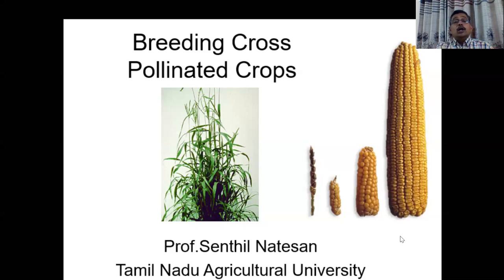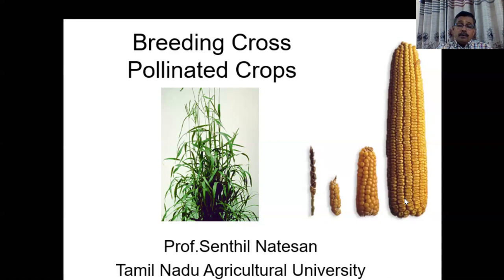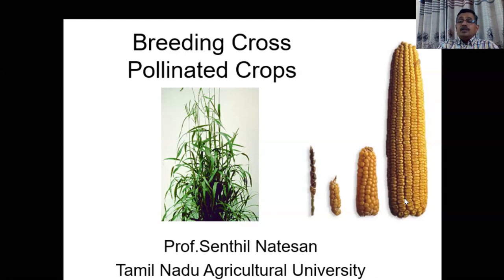Which crops are cross-pollinators? In the first slide I listed them: maize is one of the popular crops with a cross-pollinator nature, and we have pearl millet, melon, cucumber, cassava — there are a lot of crops that are cross-pollinators. Many vegetable crops are bee-pollinated and are highly cross-pollinator in nature.